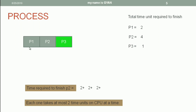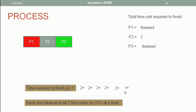After that we execute P1 again — it has only two time units remaining, so P1 finishes its execution. Next, P2 gets a chance and it also has only two time units remaining — but wait, first P3 gets the next chance. P3 requires only one time unit for completion, so it executes for one time unit and P3 is finished. Then it is P2's turn again, and P2 executes for its remaining two time units and finishes.